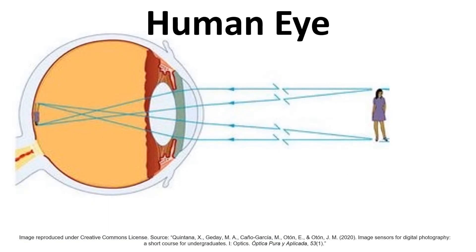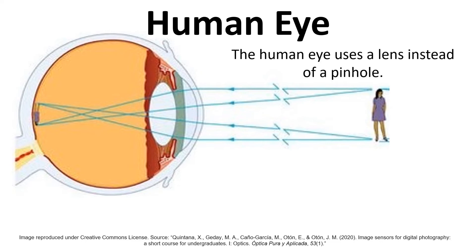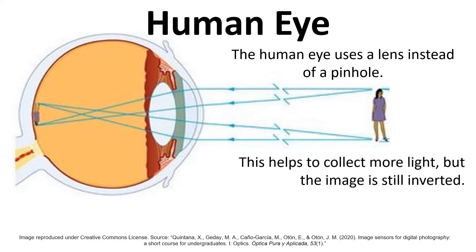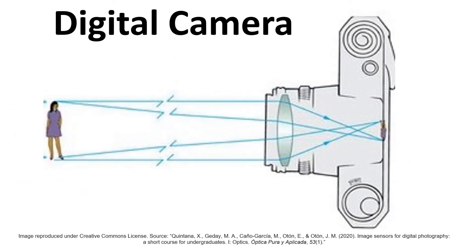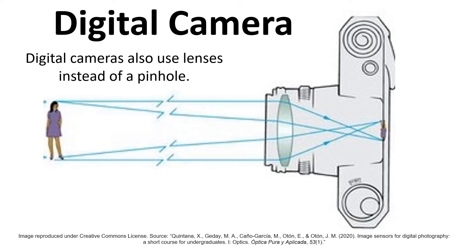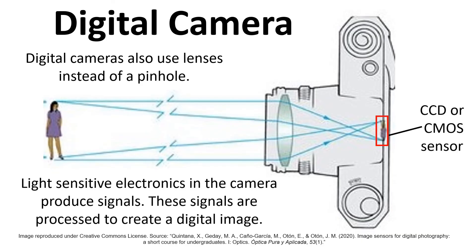The human eye does not use a pinhole but instead uses a lens, which has the advantage of collecting a lot more light, though the image is still inverted. There's a retina at the back containing light-sensitive cells that detect the image and send electrical impulses to the brain for image processing. Similarly, the digital camera also has a lens instead of a pinhole, forming an image on a CCD or CMOS sensor — light-sensitive electronics that produce signals which are then processed to create the digital image.